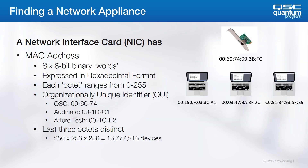The MAC address of a device is formatted as 6 8-bit binary words expressed in hexadecimal. Each octet ranges from 0 to 255. The first three parts of the MAC address is what we call the Organizationally Unique Identifier, or OUI, and that tells us who made it. Common OUIs we might see on a typical Q-SYS network would be QSC, which has 00:60:74; Audinate, which is 00:1D:C1; or Aterotec, which is 00:1C:E2. The OUI combined with the last three possible octets allows each manufacturer to make about 16.7 million devices before they need to go back and apply for another OUI. Very large manufacturers, like HP and Cisco, have several OUIs.